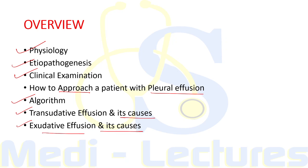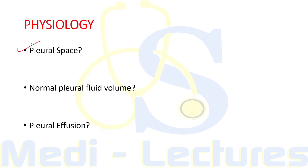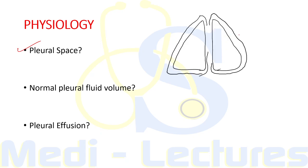The pleural space lies between the lung and chest wall, between the visceral pleura and parietal pleura. The outer layer is the parietal pleura and the visceral pleura is adherent to the lung surface. The normal fluid volume present in the pleural cavity is around 10 to 20 ml. This fluid keeps the pleura moist and reduces friction between the two layers during breathing. Pleural effusion is the excess quantity of fluid in the pleural space.